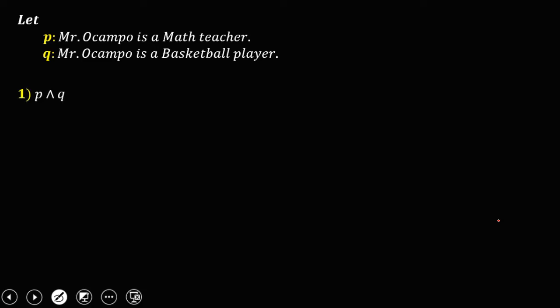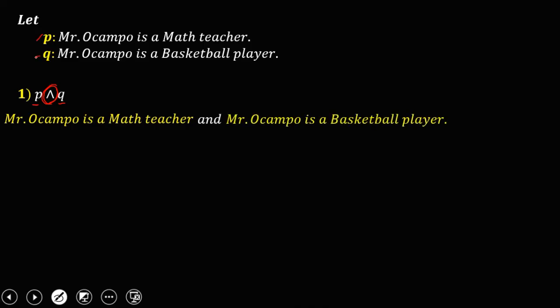So P conjunction Q. Since P is 'Mr. Ocampo is a math teacher,' then this conjunction is read as 'and,' then Q is 'Mr. Ocampo is a basketball player.' So this is now the compound statement.